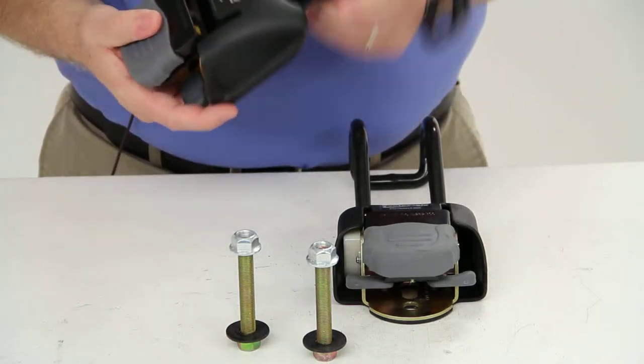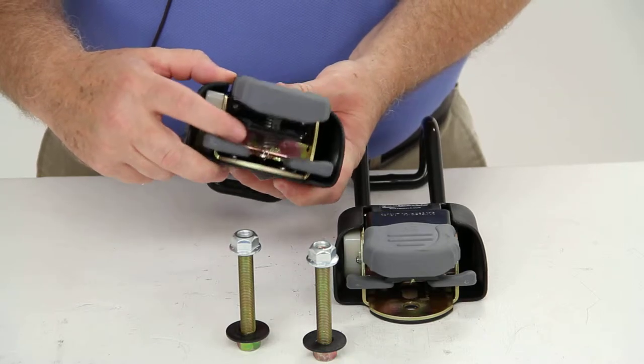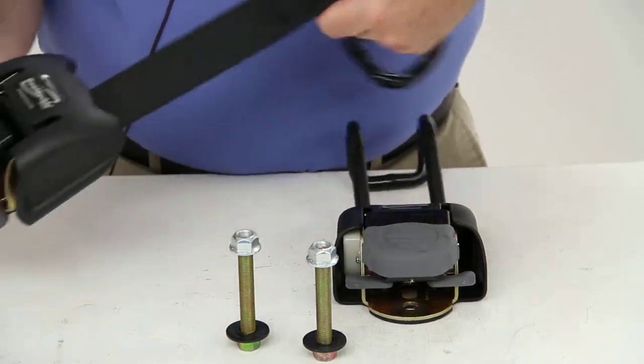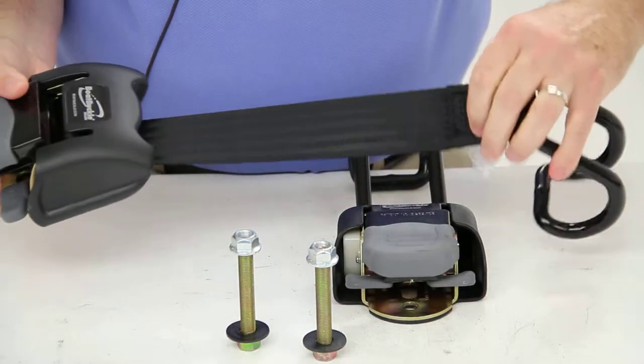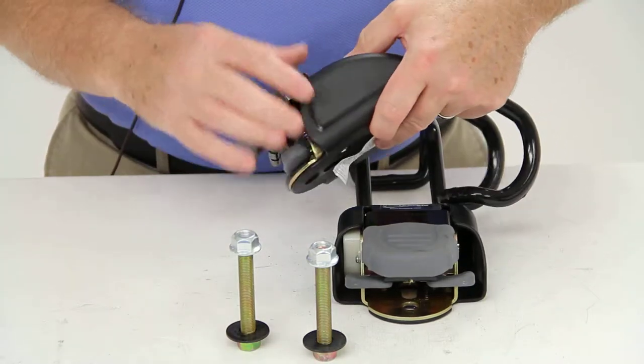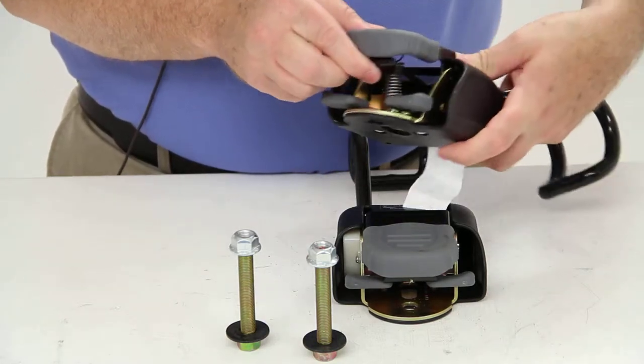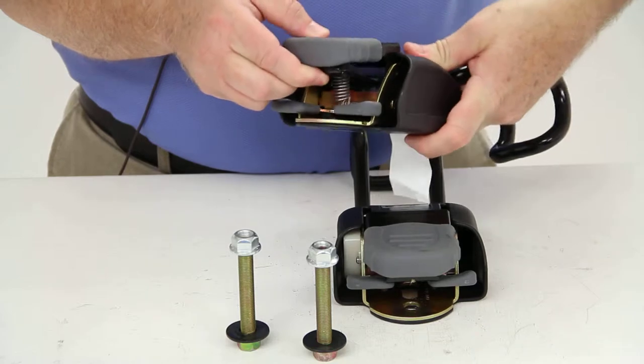These ratcheting straps have a corrosion-resistant steel body. The strap is an actual seat belt-quality polyester webbing. And this is all in a sturdy plastic housing. And on the inside is a stainless steel spring.